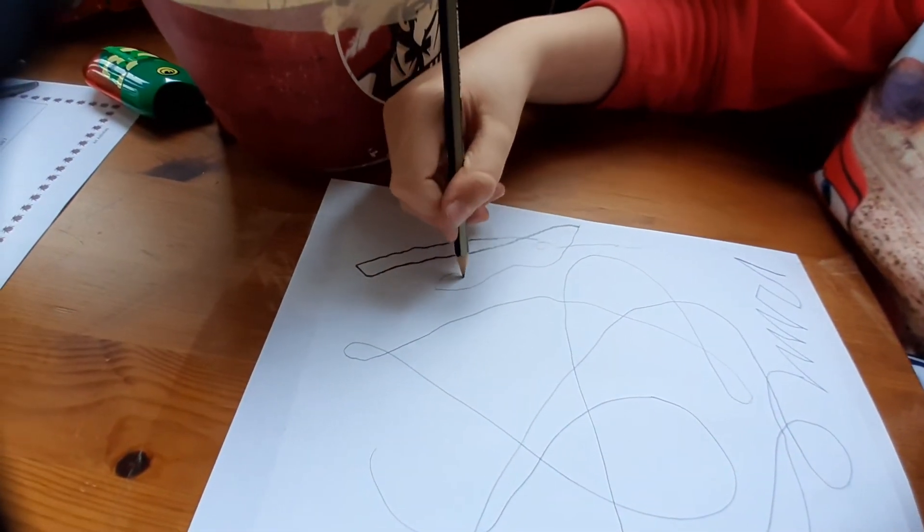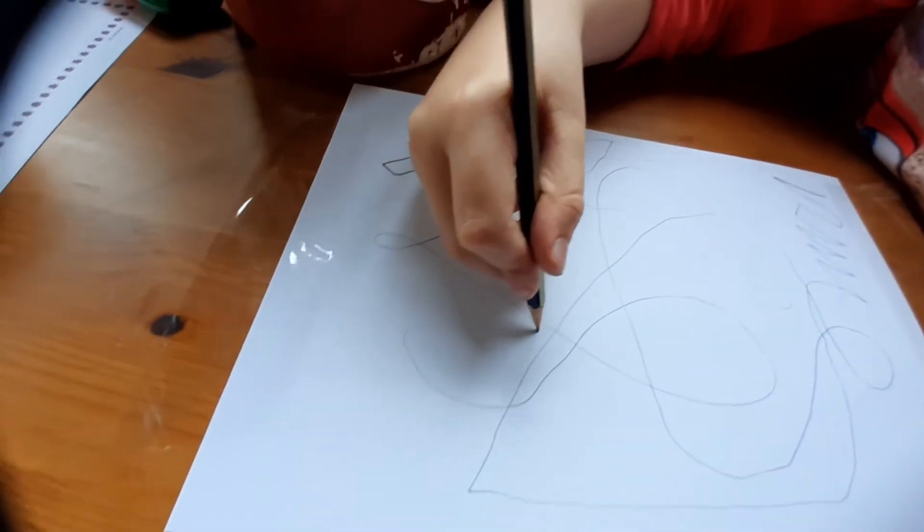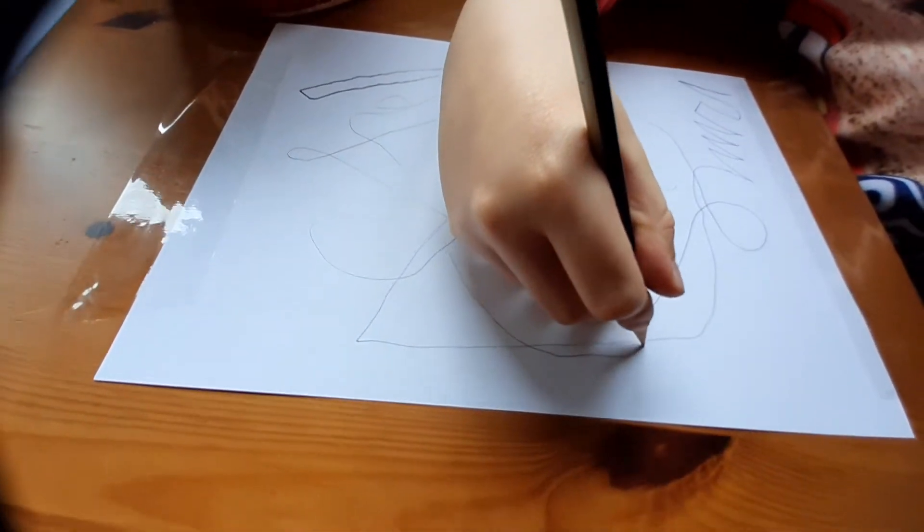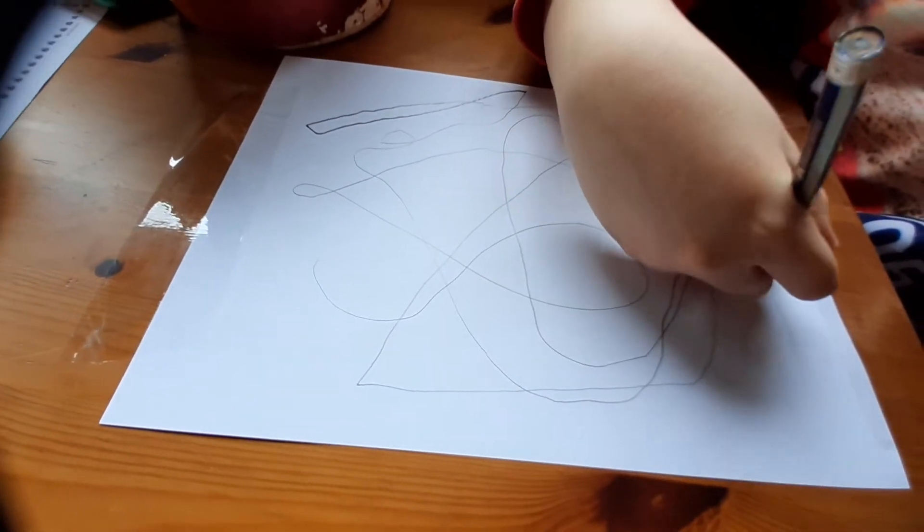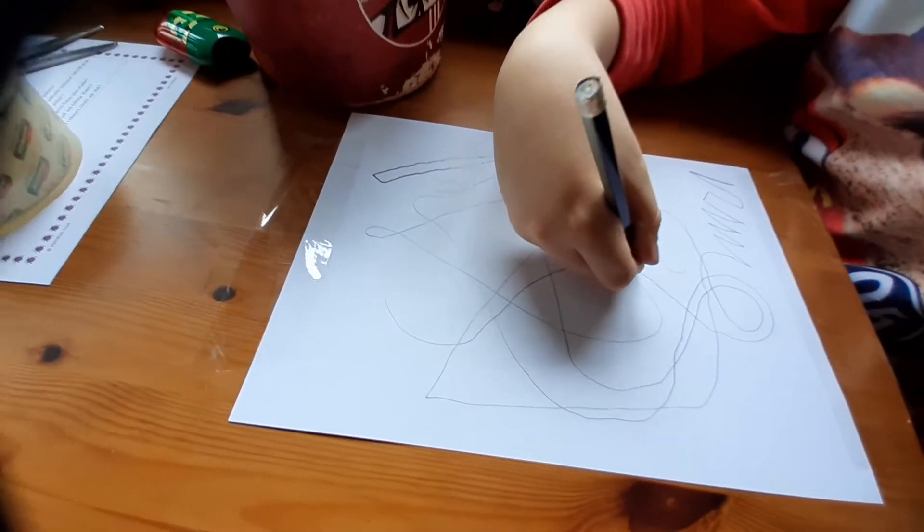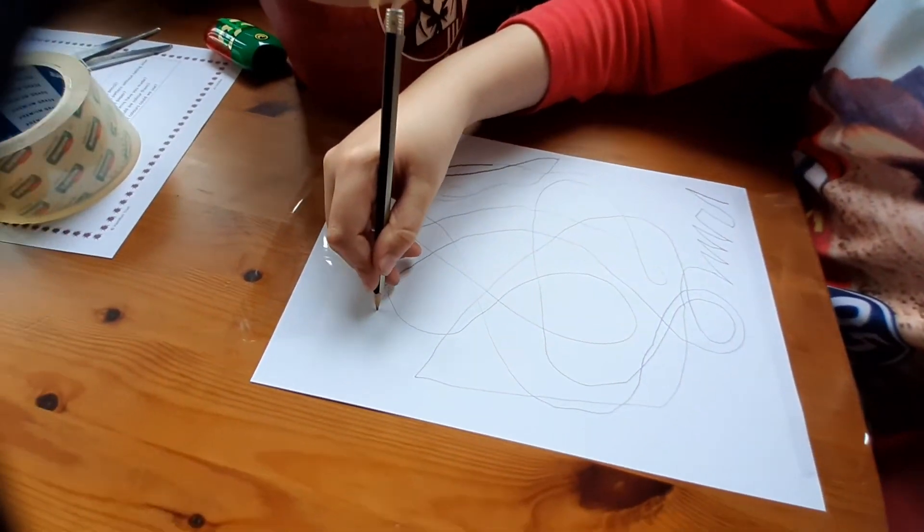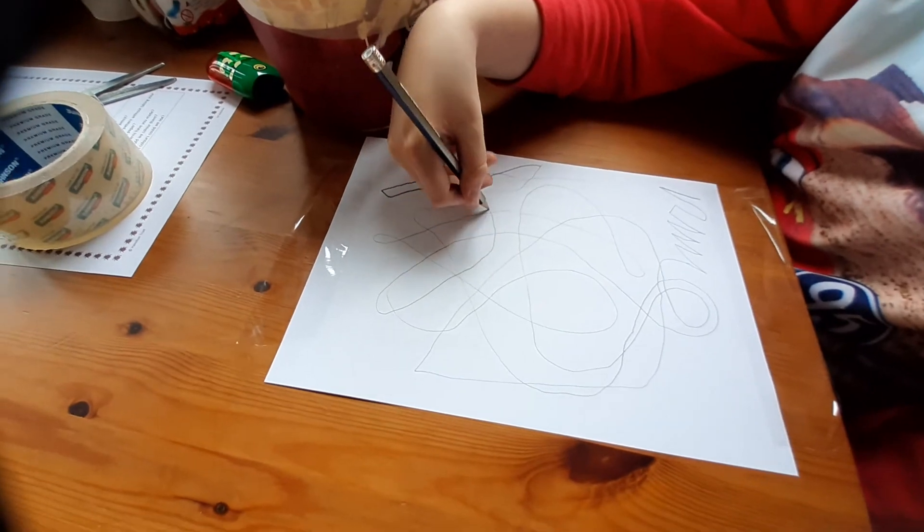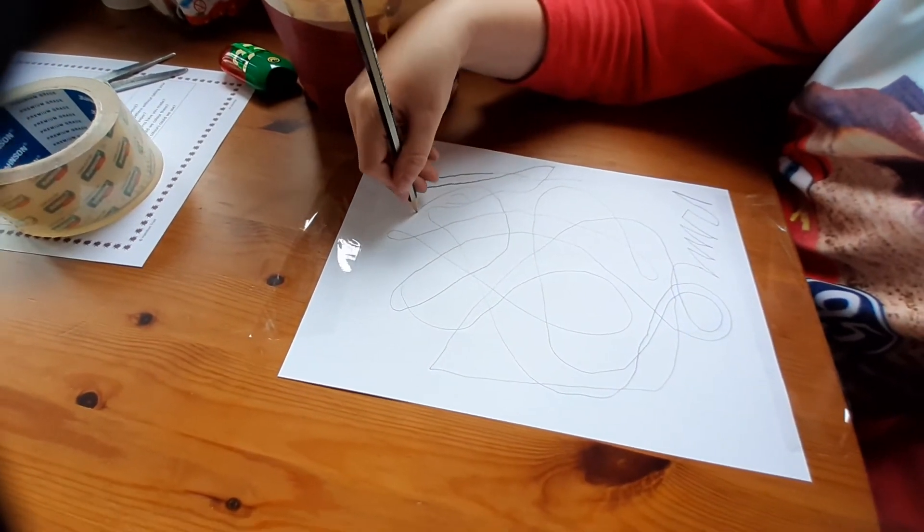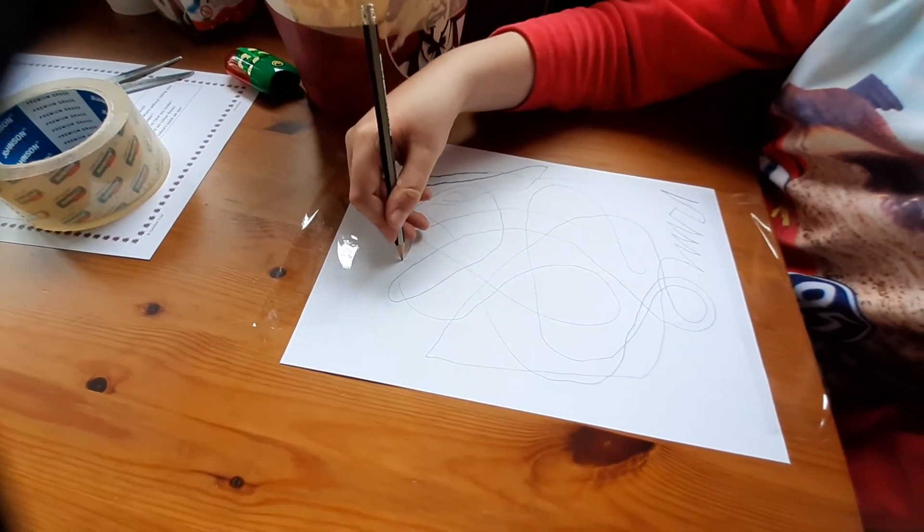You can make it into a normal line, a squiggly squiggly line. It depends on how much you press on the pencil. The more you press, the thicker the line will become. The less you press, the thinner the line will become.